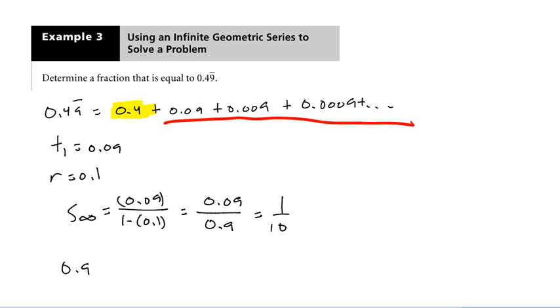So that part's going to be a tenth. So 0.49 repeater is going to equal 0.4 plus a tenth. 0.4 is, of course, 4 over 10 plus 1 over 10, so that's going to equal 5 over 10 equals a half. And I think most of you probably knew that already. Okay, so 0.49 repeater equals a half.